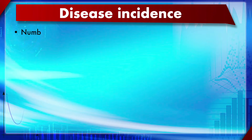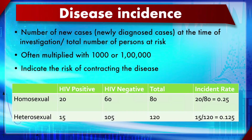Disease incidence is the number of new or newly diagnosed cases at the time of investigation divided by the total number of persons at risk. It is often multiplied by 1,000 or 100,000 and indicates the risk of contracting the disease. For example, health workers have a high risk of contracting certain diseases, which can be expressed as a disease incidence rate - such as HIV incidence by sexual orientation.